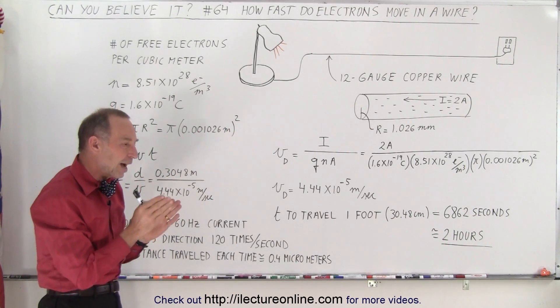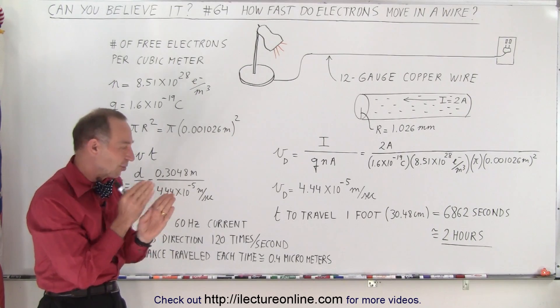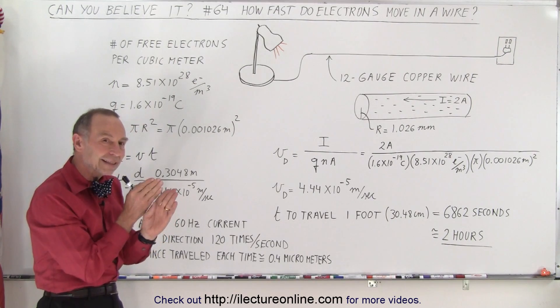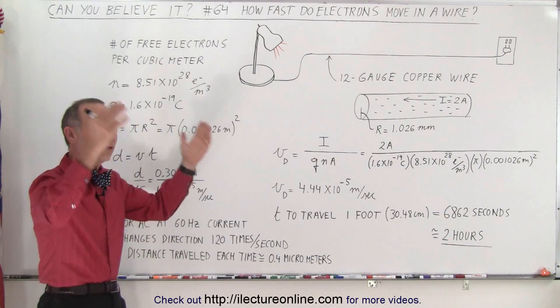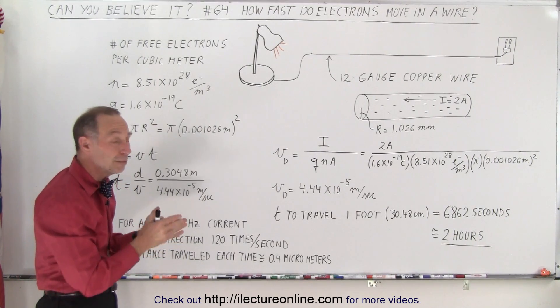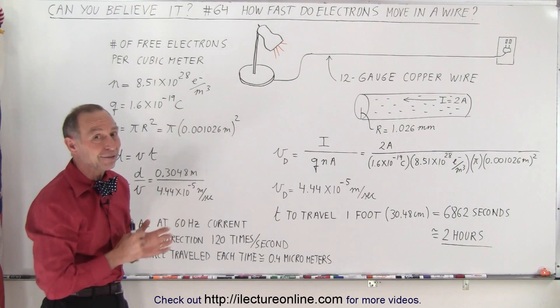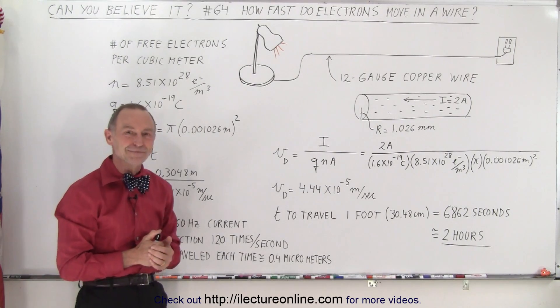So it's kind of interesting how that slight maneuver, vibration back and forth, 120 times per second as it changes direction, that tiny amount of movement is plentiful to power all the electrical devices that we have and turn on all the lights when we have AC current. Electrons don't travel that fast, not nearly as fast as we thought. And that is how it's done.